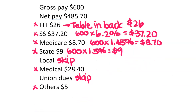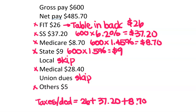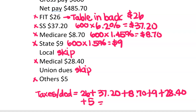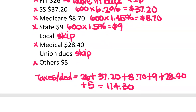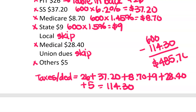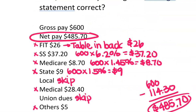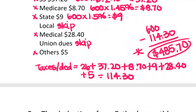Now what we're going to do is add up all of the taxes and deductions. So $26.00 plus $37.20 plus $8.70 plus $9.00 plus $28.40. Don't forget the ones you don't have to calculate — make sure you add those in as well. When we add all these together, we get $114.30. The next step is to subtract: $600.00 minus $114.30 is $485.70. So if they match, the statement is correct, so we're going to say yes.